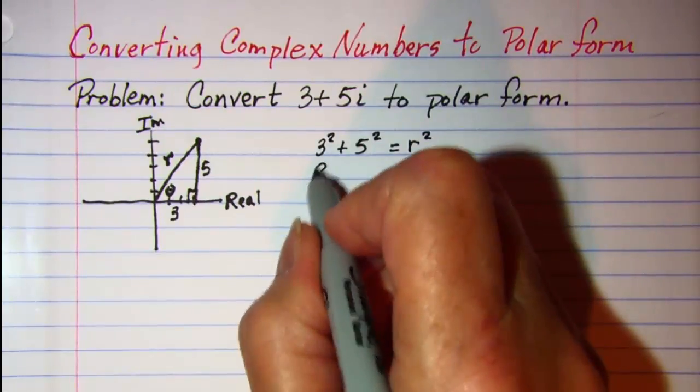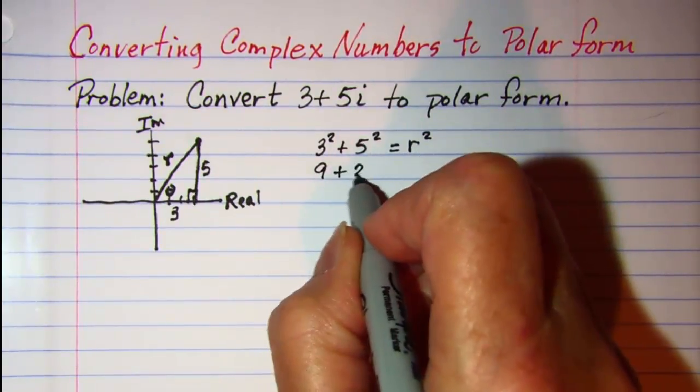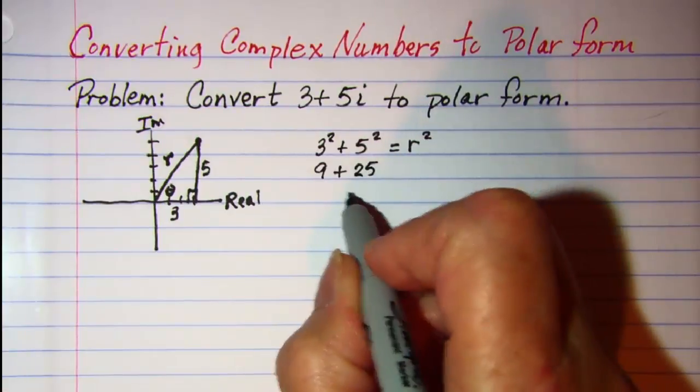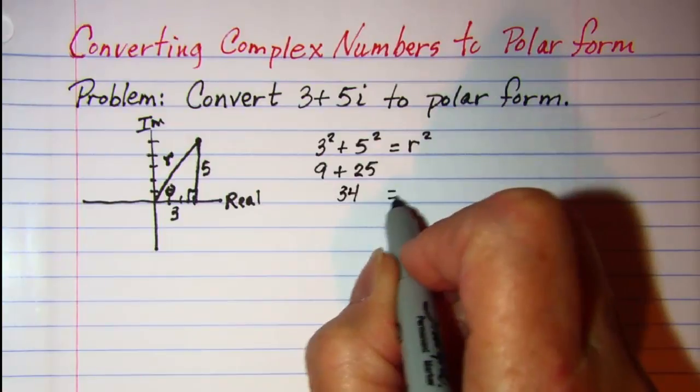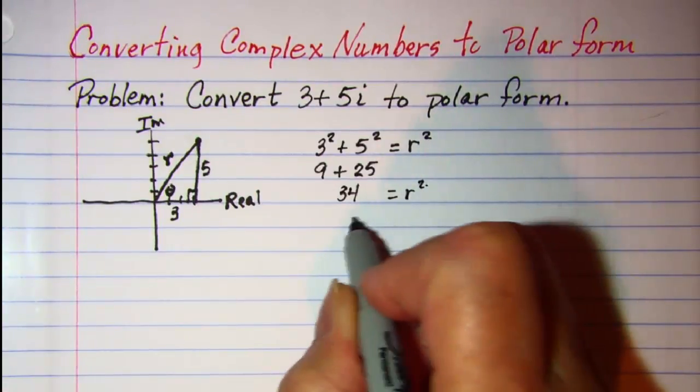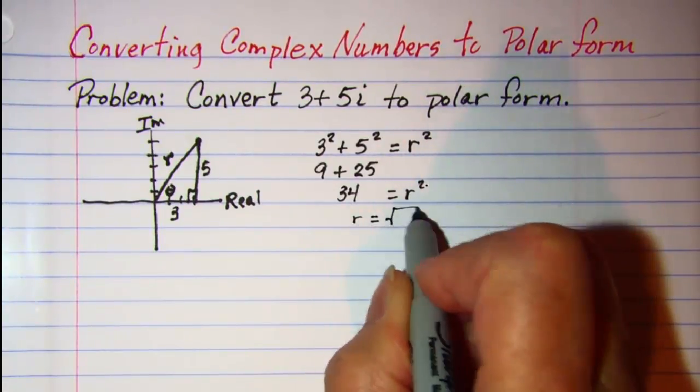3 squared is 9, 5 squared is 25 and this is 34 and that's r squared so r is the square root of 34.